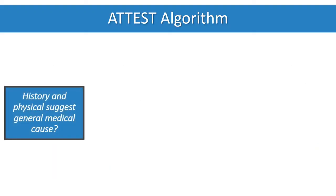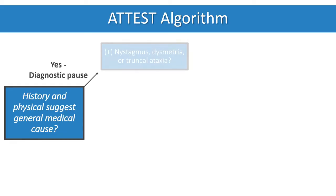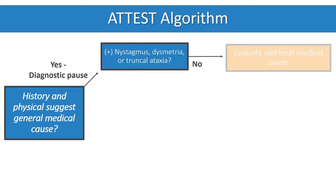The first step is to take a history and do a physical exam. If there is evidence of a general medical cause — toxic, metabolic, infectious, or cardiovascular — there is a diagnostic pause and the exam can focus on nystagmus, dysmetria, and truncal ataxia. If none of these are present, the medical causes can be evaluated and treated.